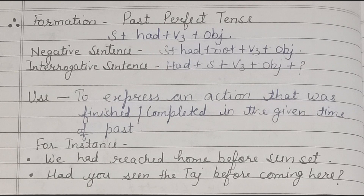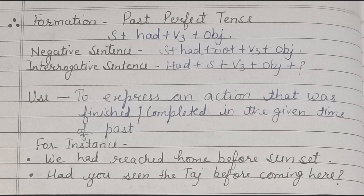Third one is past perfect tense. The formation is subject plus had plus V3 plus object. We always use V3 in perfect tenses — chahe koi bhi tense ho, present, past, or future perfect. In negative sentences: subject plus had plus not plus V3 plus object. In interrogative sentences: had plus subject plus V3 plus object plus question mark. Use of this tense: to express an action that was finished or complete in a given time of the past — for instance: 'We had reached home before sunset.'